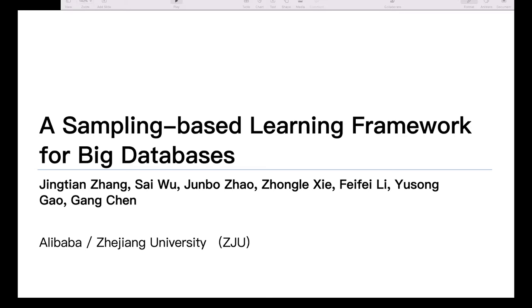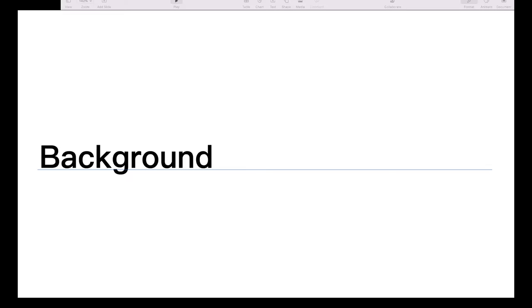I'll do the best I can to give a general outline and motivation of this paper. But if you're interested in the details, I'm clearly not the right person to ask. I recommend you send an email to us or keep it offline, and we're more than happy to answer any questions. The title of our paper is A Sampling-based Learning Framework for Big Databases. This work is a joint effort from Alibaba and ZJU.